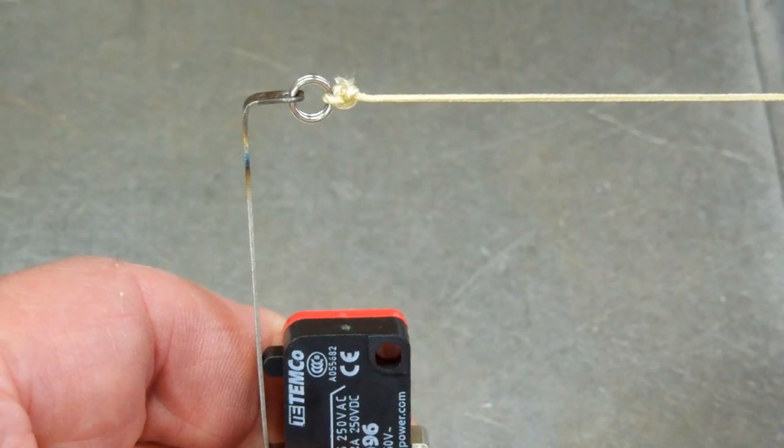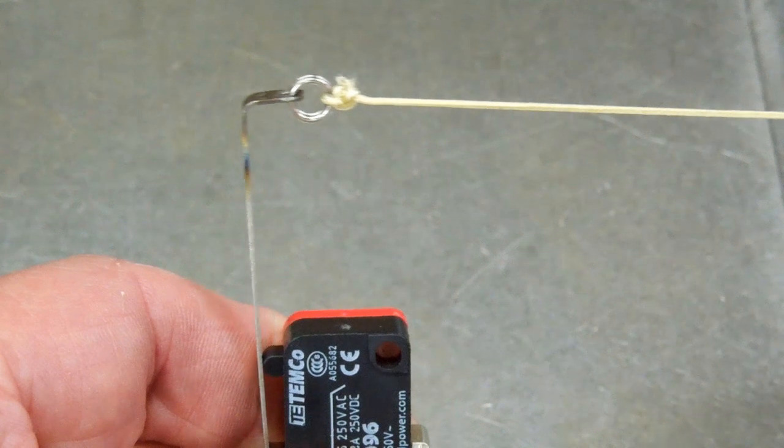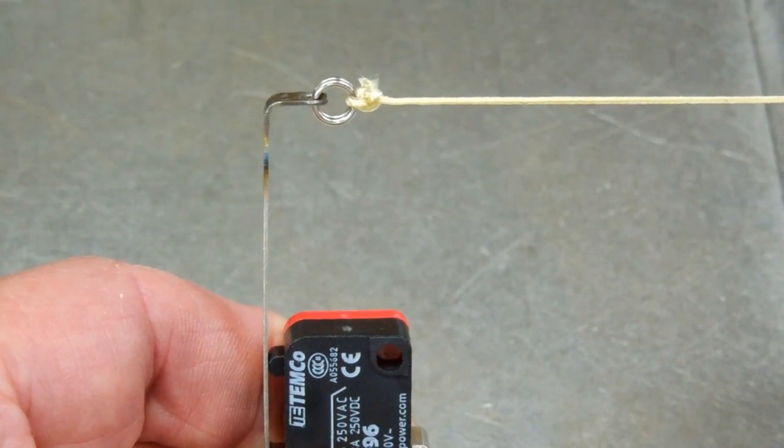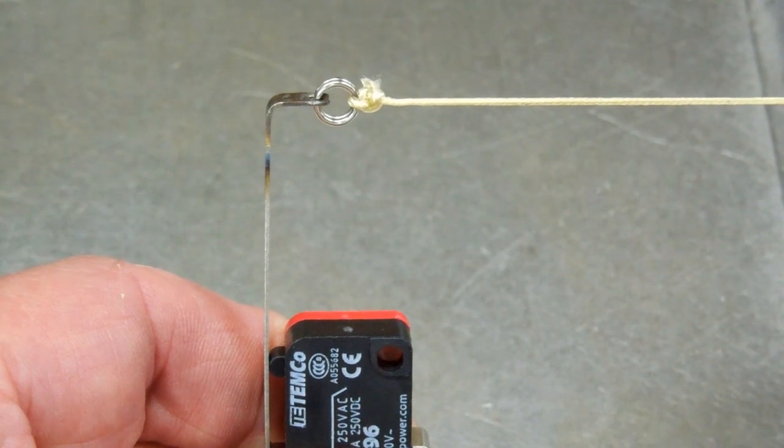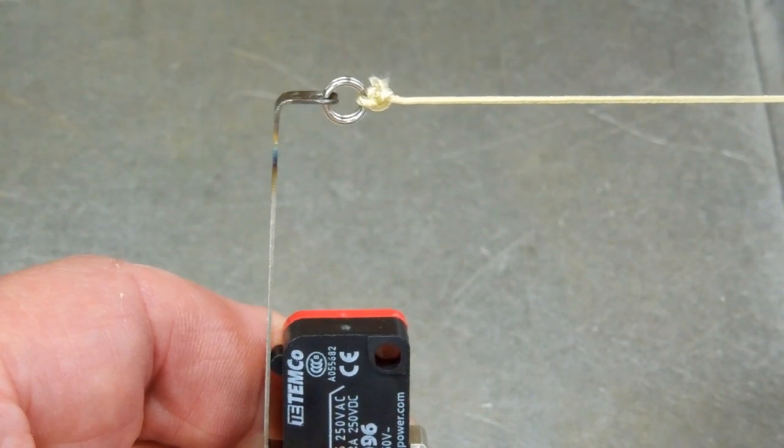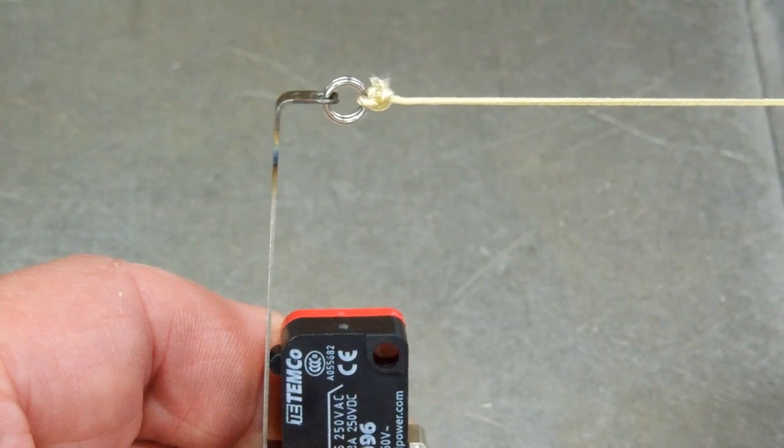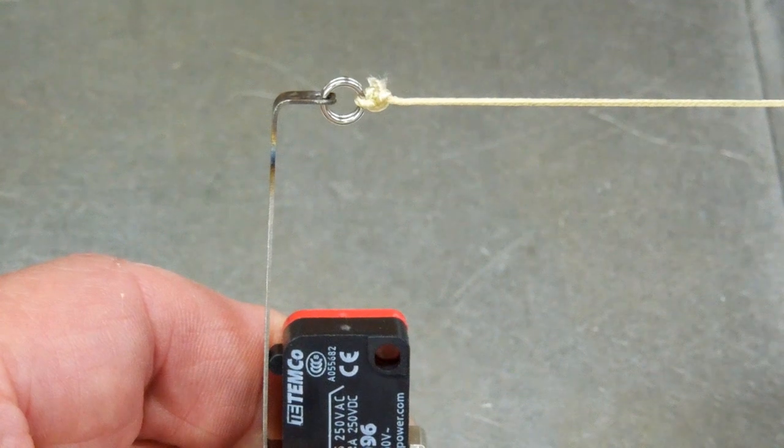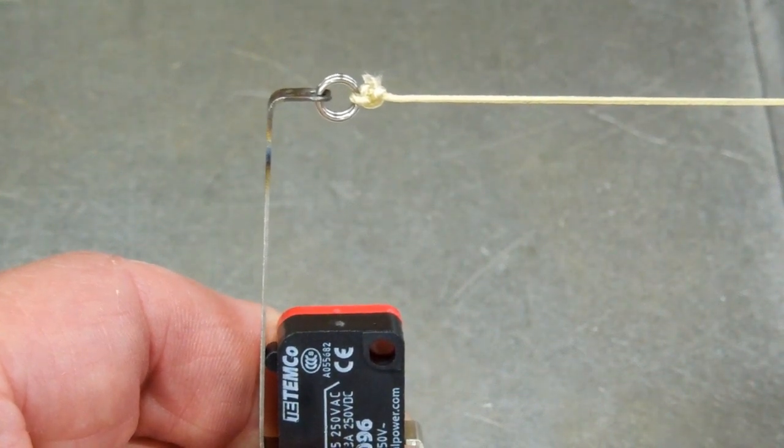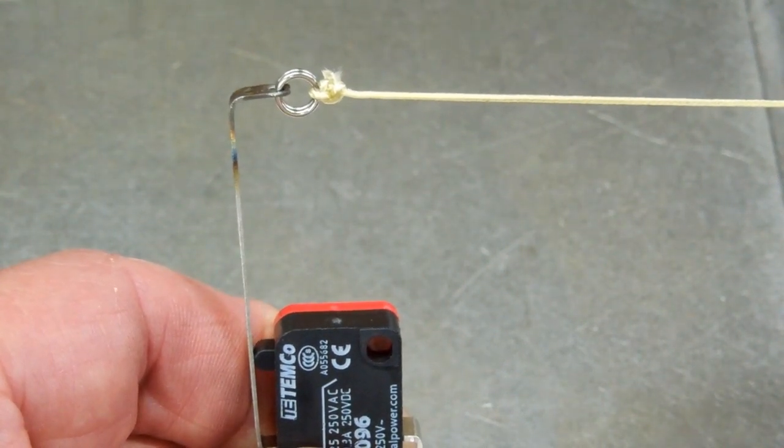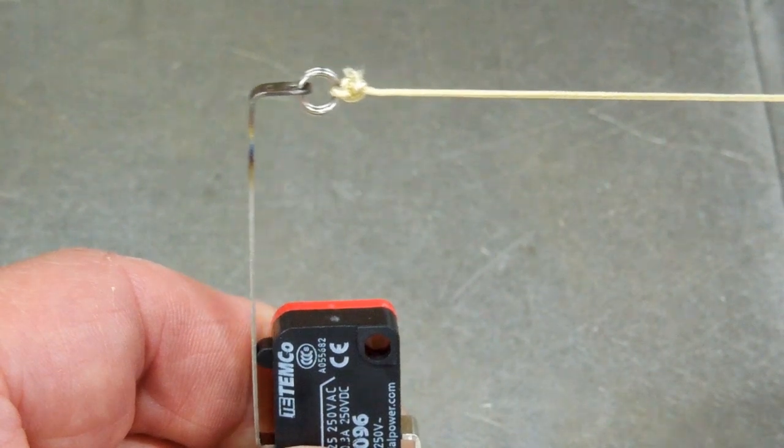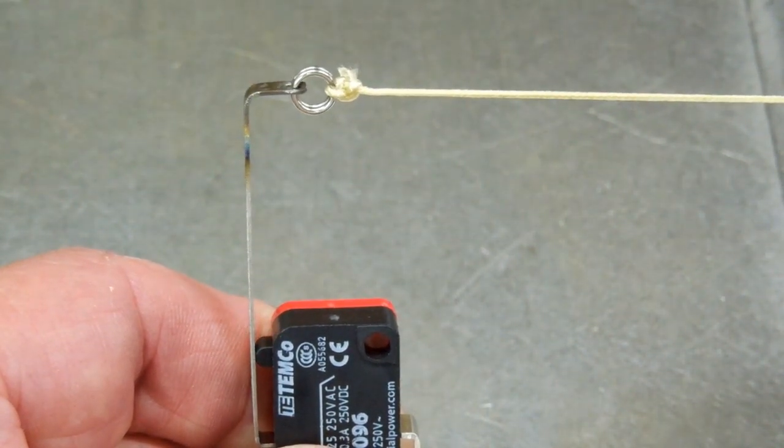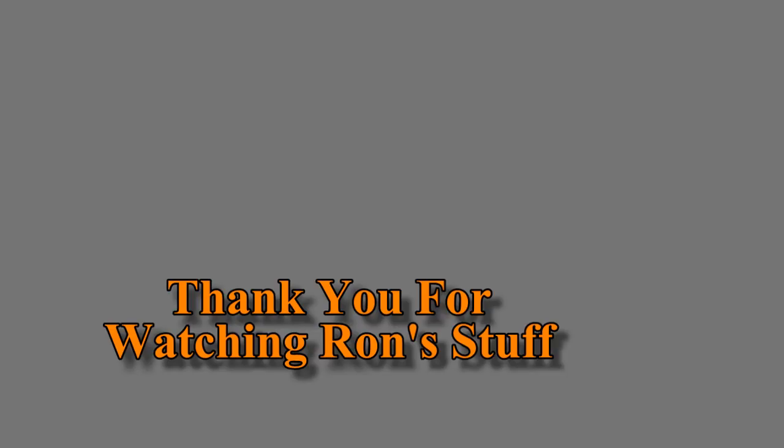The full range for this switch is like this. There's pre-travel and the operating range where it clicks on and off and then there's over-travel. I can operate the switch in this narrow range or I can use the full range of travel. It gives me quite a bit of adjustment.